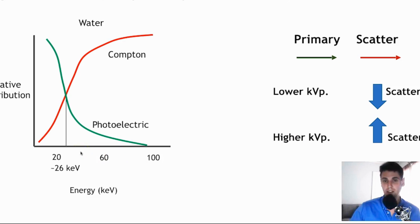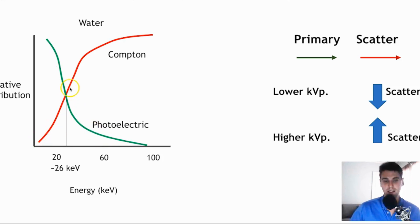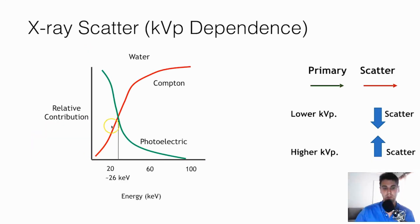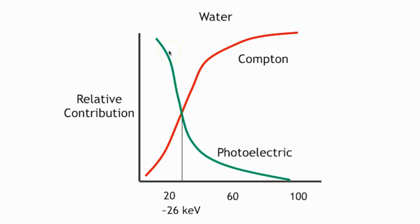We talked about this when we covered the fundamental X-ray interactions. If we look at the relative contribution, shown in green here is the photoelectric — and we prefer photoelectric interactions. Shown in red is the Compton. All of these degrade image quality. Thinking about a mono-energetic beam: as the energy of the beam increases, we have a higher proportion of Compton; as the energy decreases, we have a higher proportion of photoelectric effect.